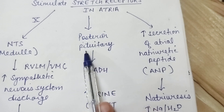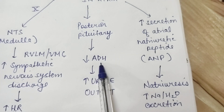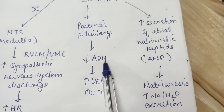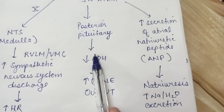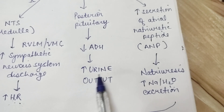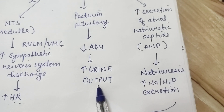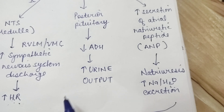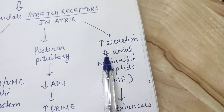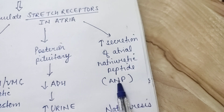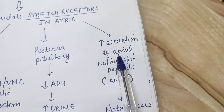In the atria, the signal also goes to the posterior pituitary, which reduces ADH — that is anti-diuretic hormone. When anti-diuretic hormone decreases, diuresis increases, meaning there is an increase in urine output, which leads to a decrease in blood volume.